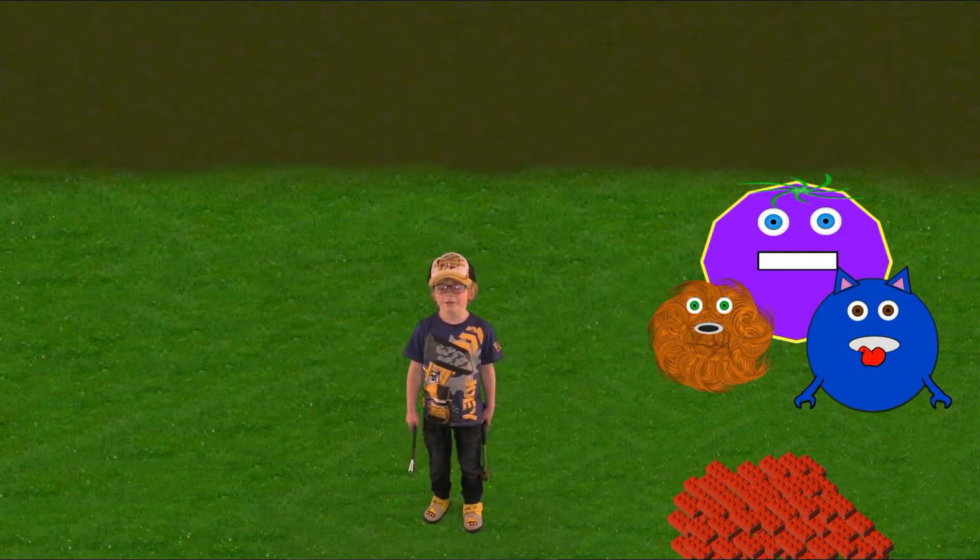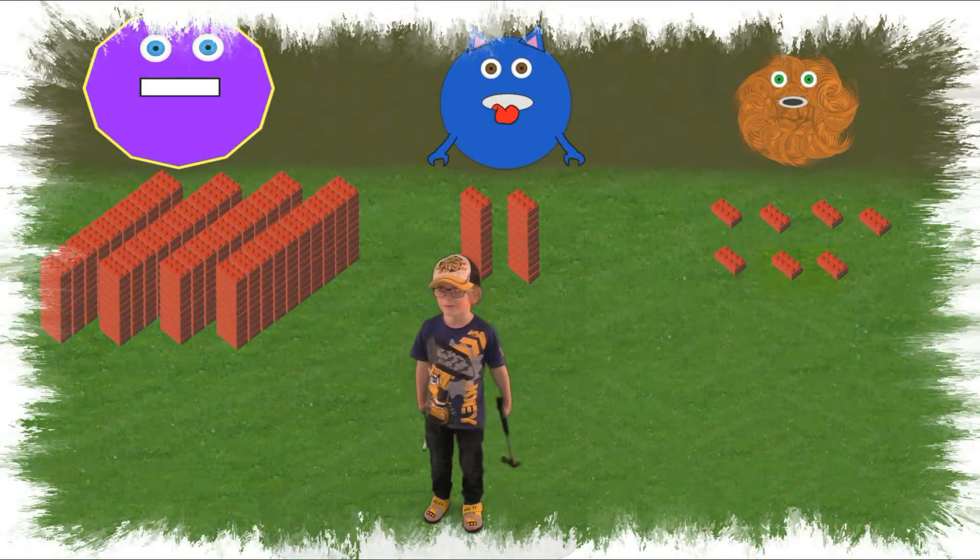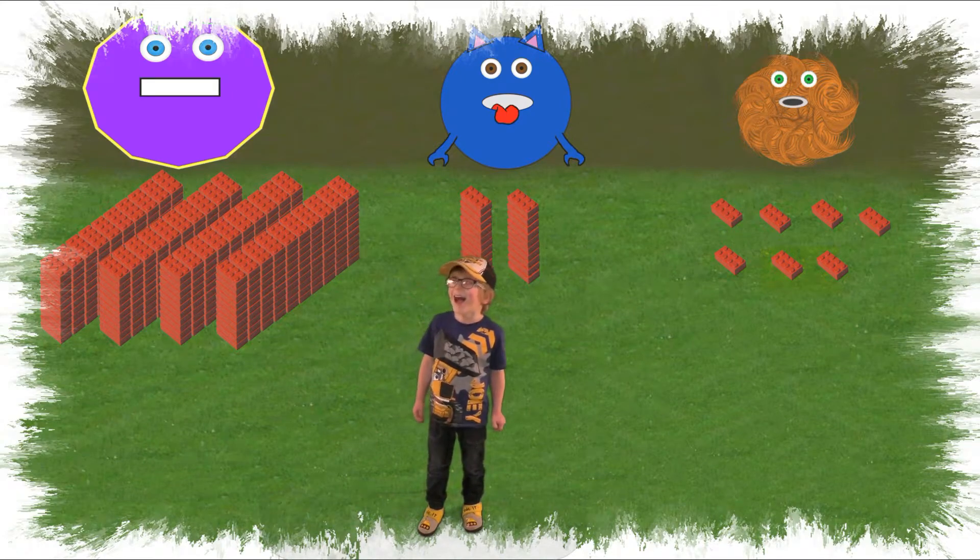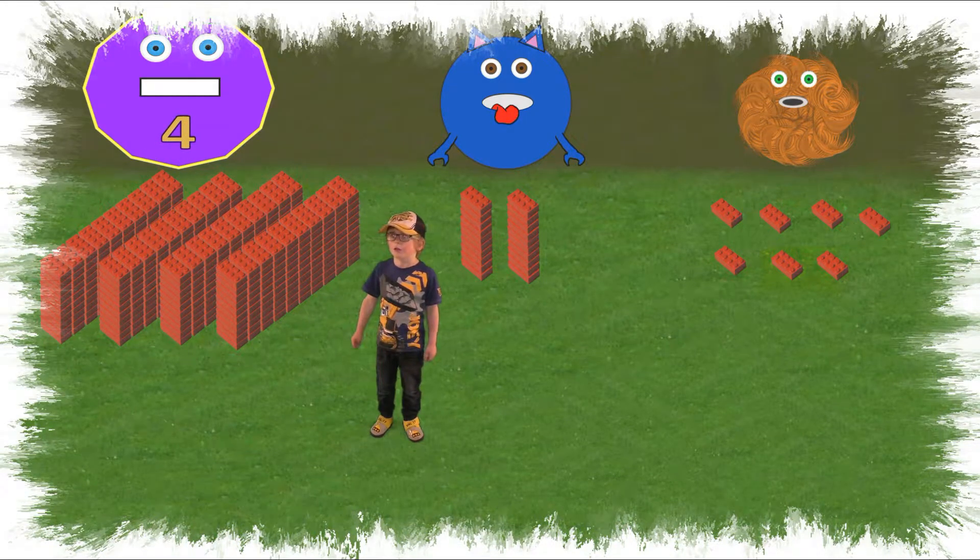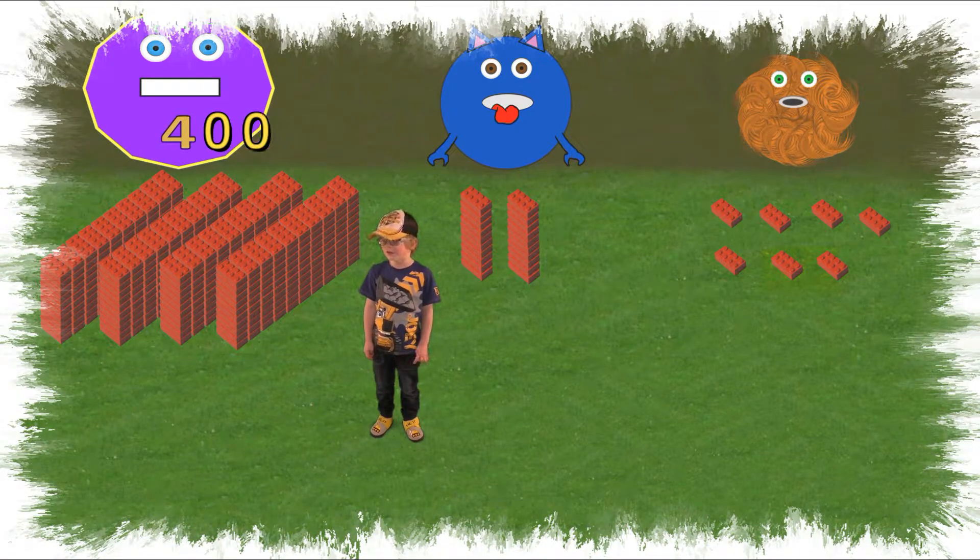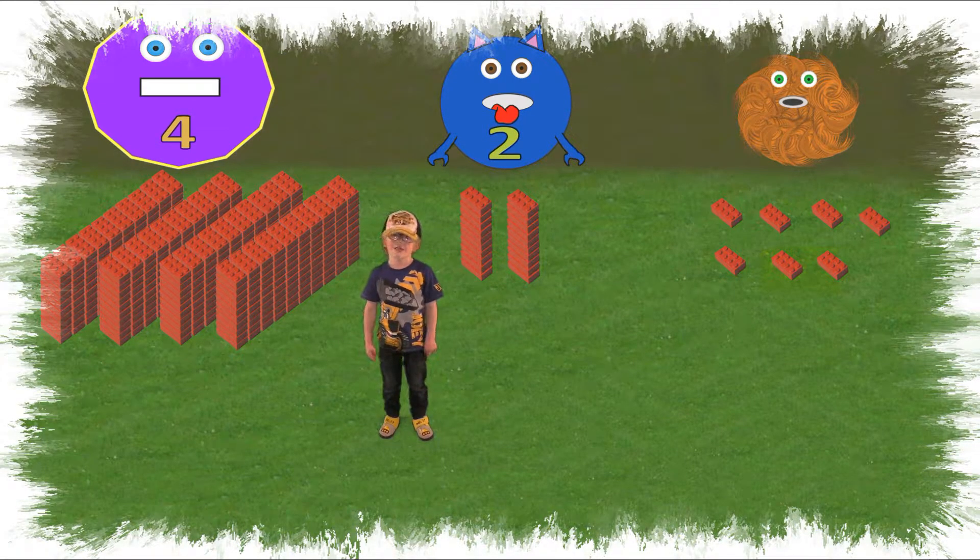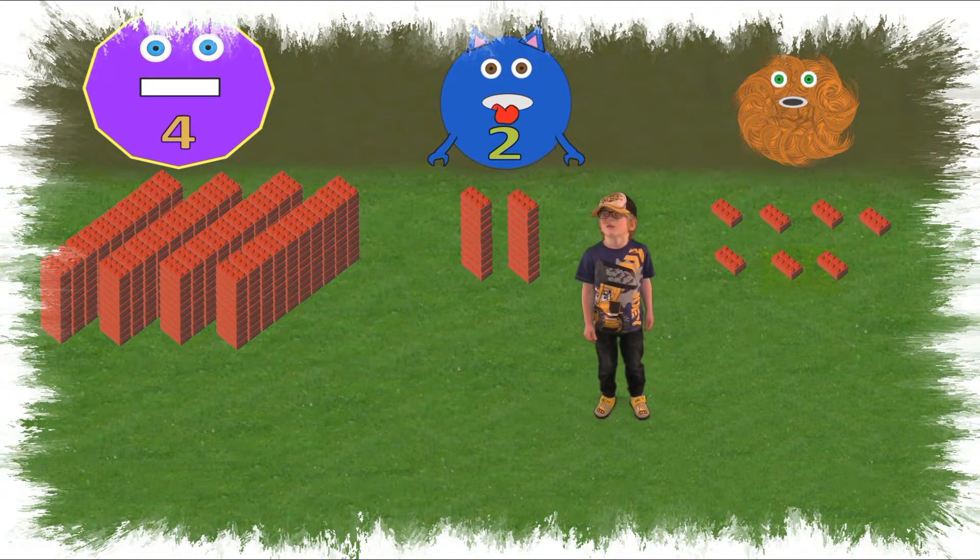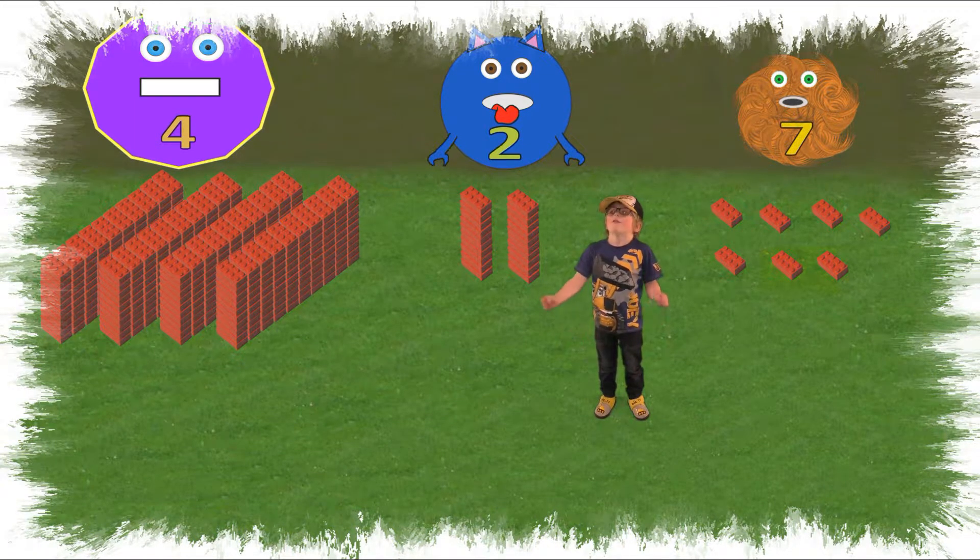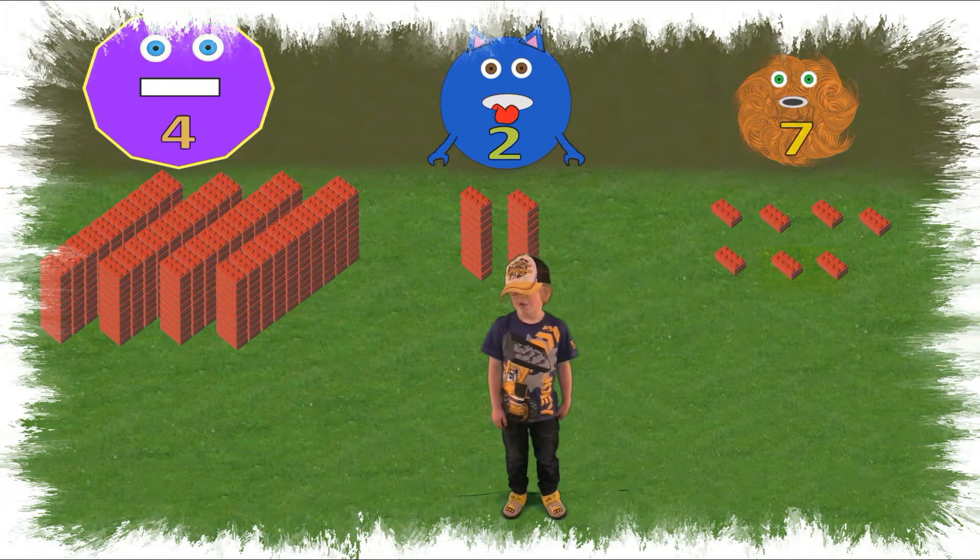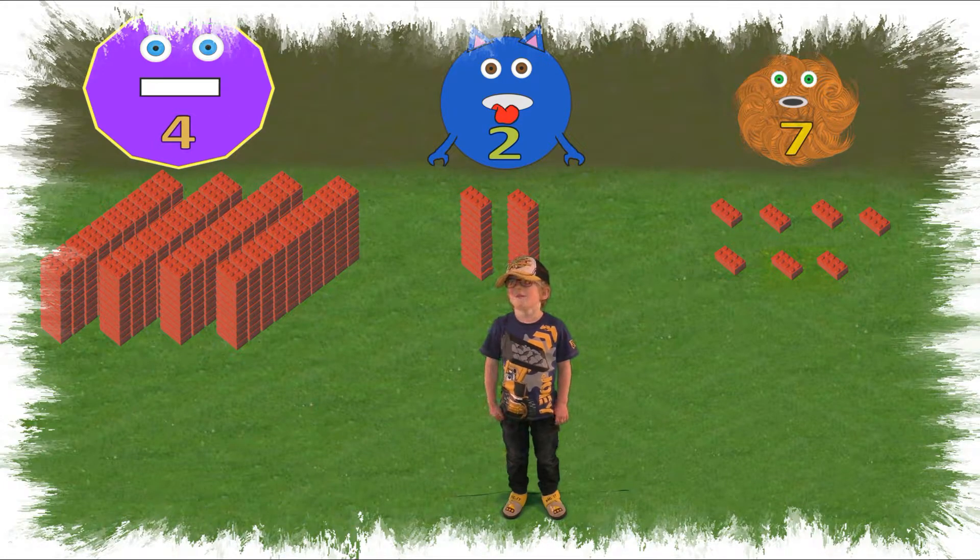In the last video, the monsters worked together to help count a massive pile of lego bricks. The hundreds monster counted four lots of hundred, that's four hundred. The tens monster counted two lots of ten, that's twenty. And the ones monster counted seven ones, so seven. So if we add it all together, in total it would be four hundred and twenty-seven bricks.